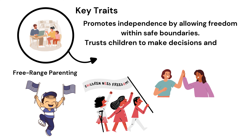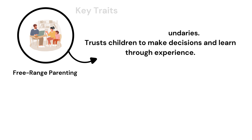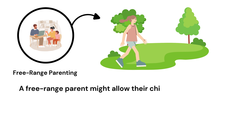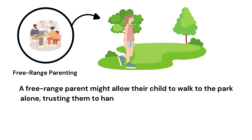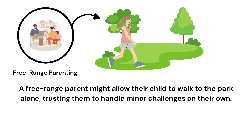Trusts children to make decisions and learn through experience. Example: A free-range parent might allow their child to walk to the park alone, trusting them to handle minor challenges on their own.